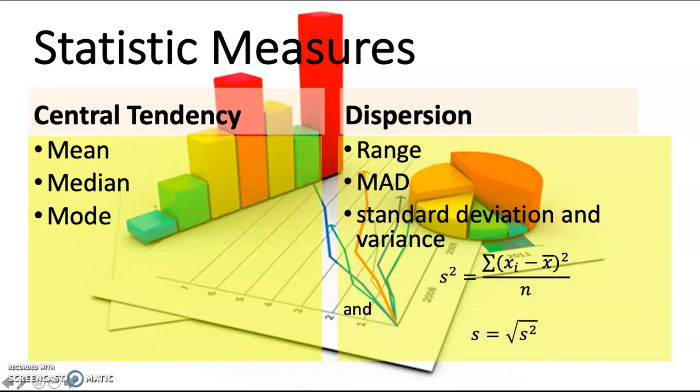What about the mode? The mode of a data set is the value that occurs most frequently. A data set can have more than one mode or even no mode. The mode is the only meaningful measure of central location that can be used to summarize qualitative data.